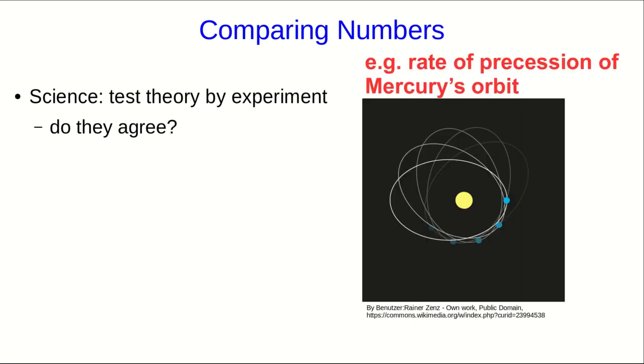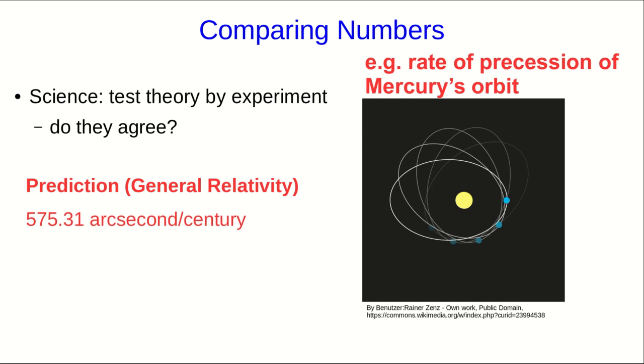For example, the rate of precession of Mercury's orbit is predicted to be 575.31 arcseconds per century. Our observations say that it's 574.1, which is not the same as 575.31. However, we wouldn't expect it to be exactly the same because measurements are not perfect, and we expect to get a different answer every time we carry out the observations.